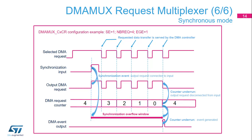Synchronization mode can be used to automatically synchronize data transfers with a timer, for example, or to condition transfers from any peripheral event mapped as a synchronization input. Additionally, a synchronization overflow can notify the software if a programmed number of DMA requests has not been completed between two synchronization events.